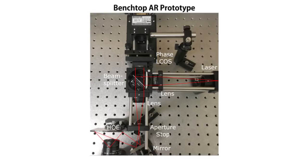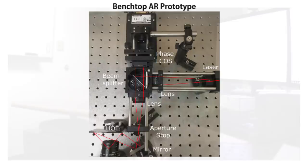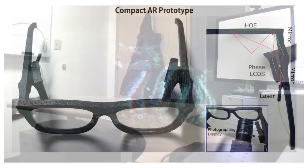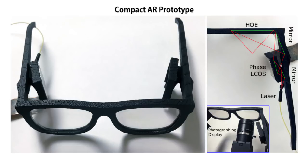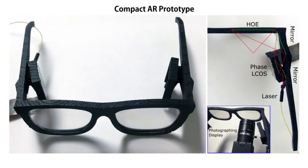We also constructed holographic displays for see-through augmented reality applications. We used a thin, flat holographic optical element as an optical combiner. Here we show an augmented scene on a prototype augmented reality device. We also created a much smaller augmented reality prototype consisting of a miniaturized holographic projector attached to an eyeglass-like frame. A holographic optical element cut in the shape of an eyeglass lens serves as the optical combiner.